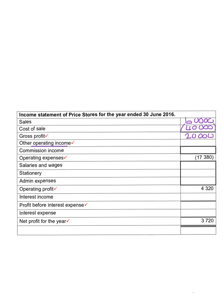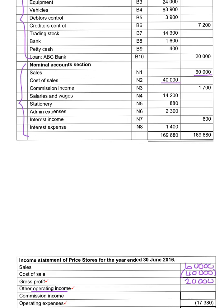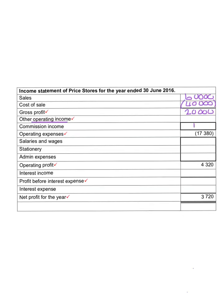In this example we only have commission income. We will transfer the 1,700 commission income and will then indicate that the total operating income is 1,700.